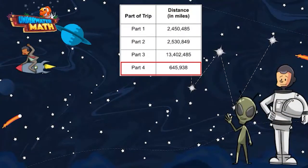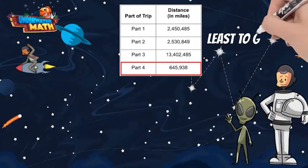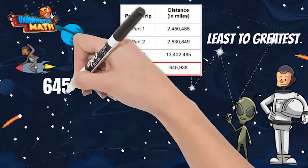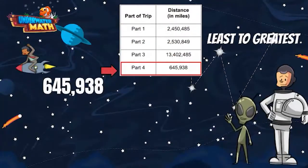Lenny wants us to try and put these numbers in order from least, smallest, to greatest, biggest. Let's find the smallest number first. Remember, we are looking for a number with less place values than the others first. Do you see one? Great! Part 4 has the least distance at 645,938. We will list that number first because it is the smallest number.